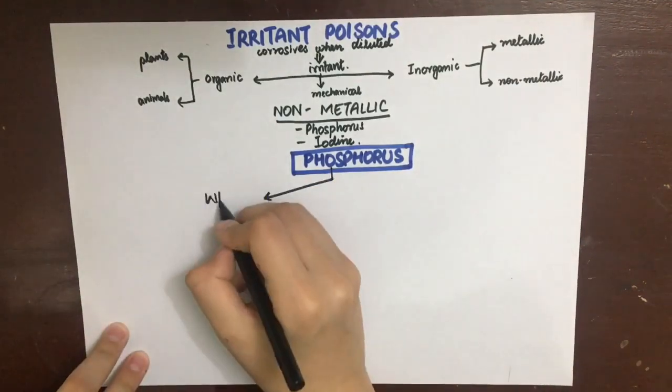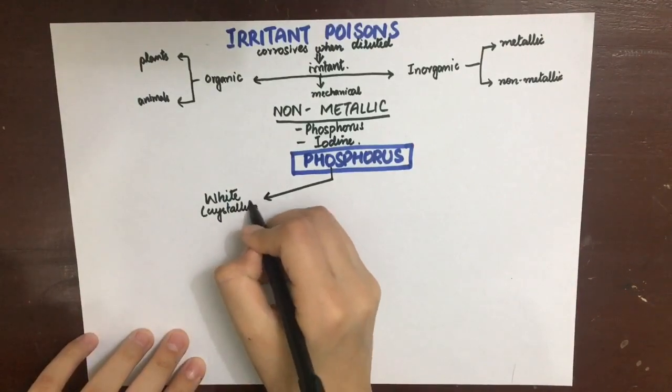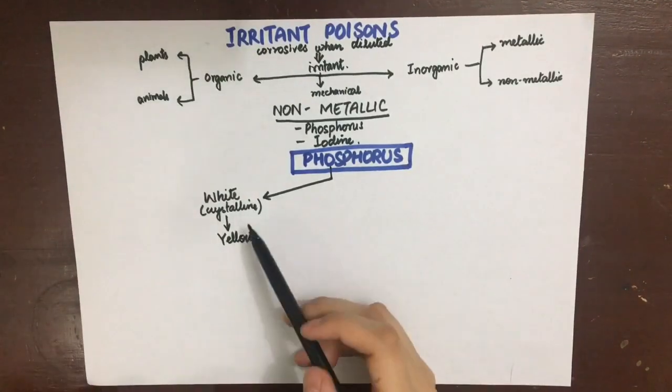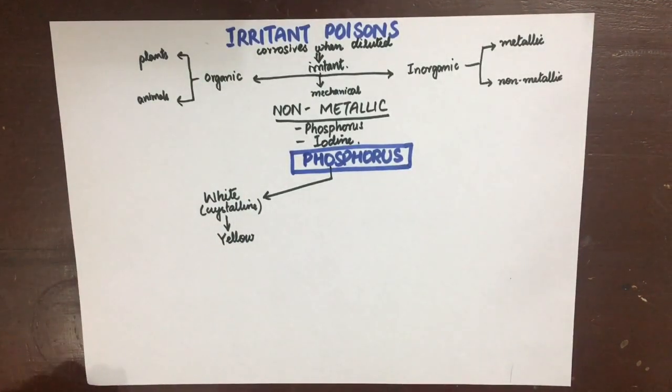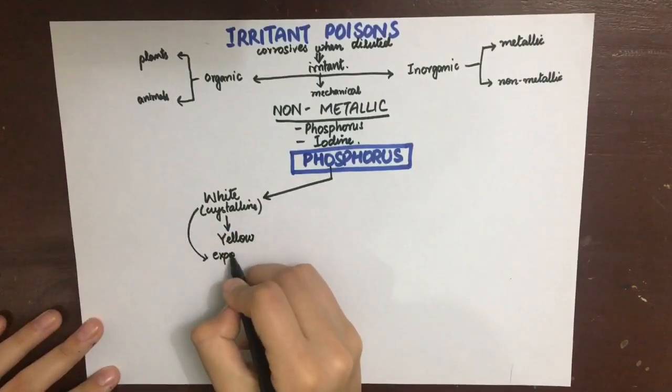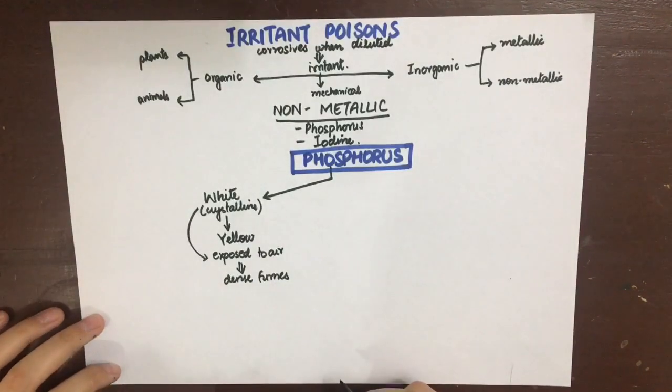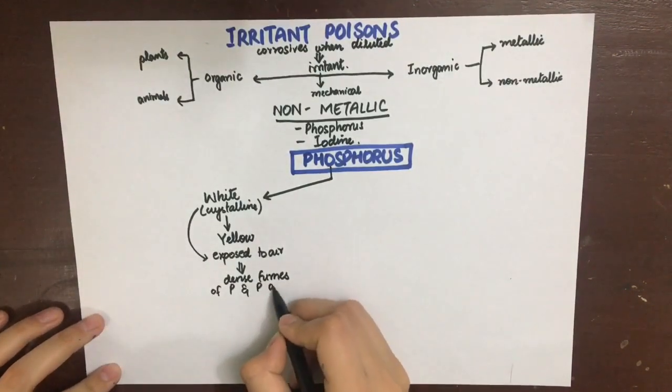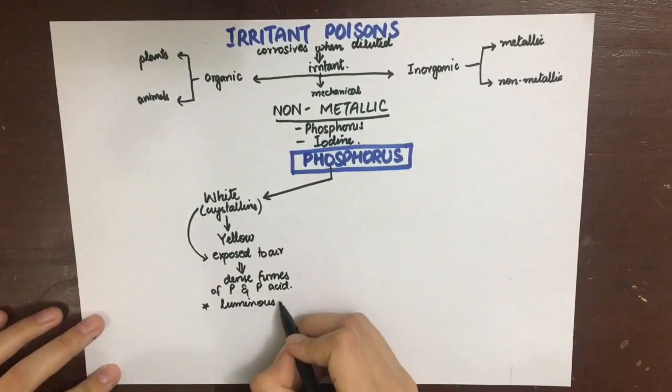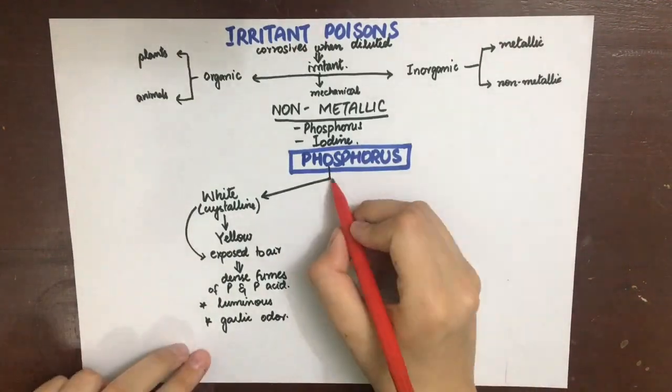Phosphorus primarily exists in two forms: crystalline and amorphous. The crystalline form is white and becomes yellow when exposed to air, so it's also called yellow phosphorus. It is easily oxidized so it is kept submerged in water to prevent ignition on air exposure.